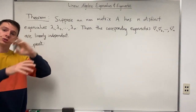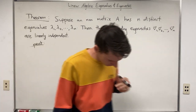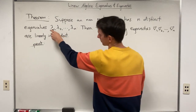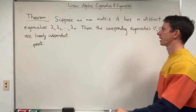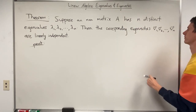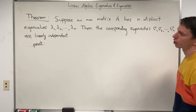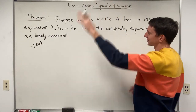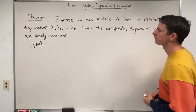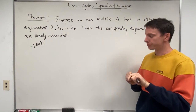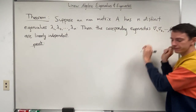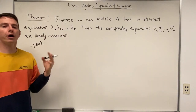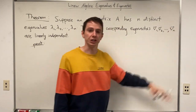The first theorem we need: suppose that an N×N matrix A has N distinct eigenvalues λ₁, λ₂, ..., λₙ. Then the corresponding eigenvectors v₁, v₂, ..., vₙ are linearly independent. We prove this by contradiction, assuming the eigenvectors are linearly dependent.